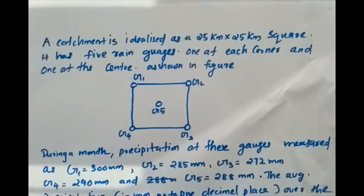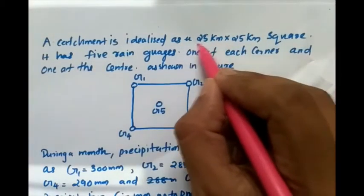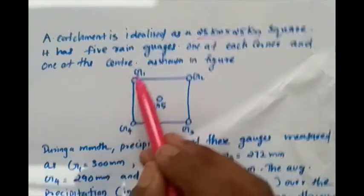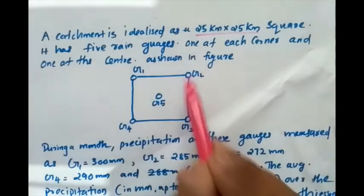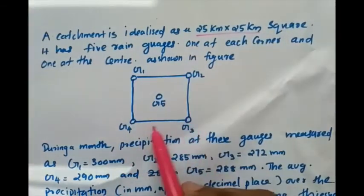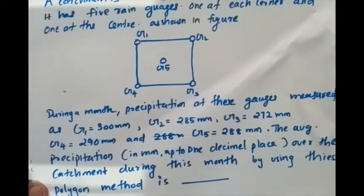Here is a question on the Tyson Polygon method to find out the mean depth of rainfall. The catchment area is 25 kilometer by 25 kilometer, so it is a square area. It has five rain gauges — one at each corner and one at the center, labeled G1, G2, G3, G4, and G5.